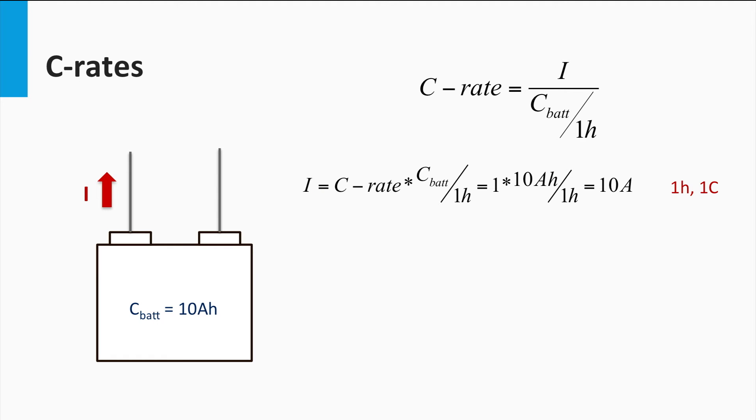This is where the C-rate comes in. C-rate is a measure of the rate of discharge of the battery relative to its capacity. The C-rate number is nothing but the multiple of the current over the discharge current that the battery can sustain over 1 hour. For example, a C-rate of 1C for 10 Ah capacity battery would correspond to a discharge current of 10 Ah over 1 hour.